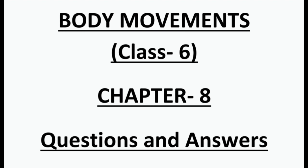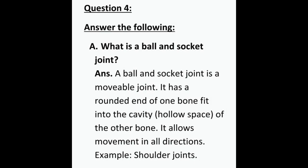Question 1: What is a ball and socket joint? A ball and socket joint is a movable joint. It has a rounded end of one bone that fits into the cavity of the other bone. As we also saw in the activity when we read the chapter, it has a rounded end of one bone fit into the cavity of the other bone.